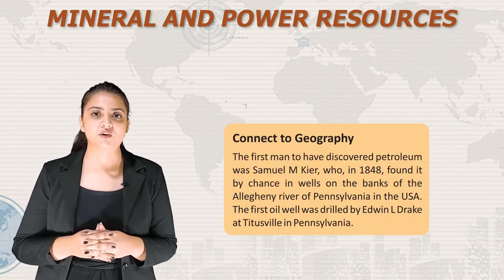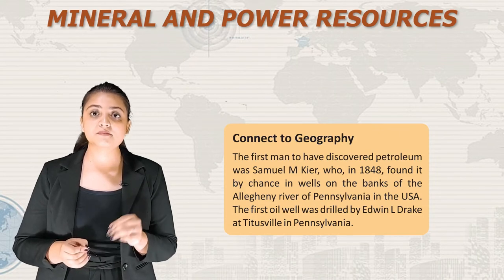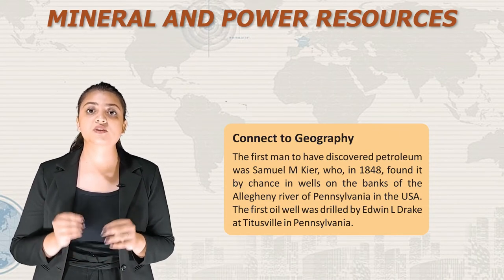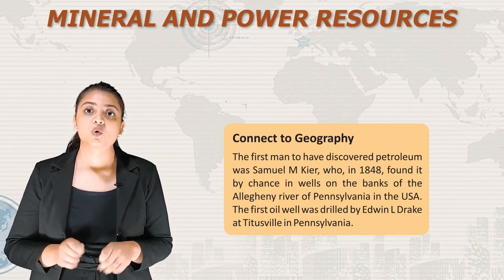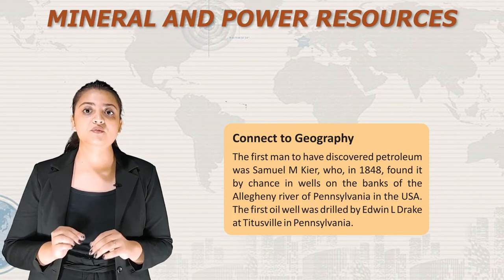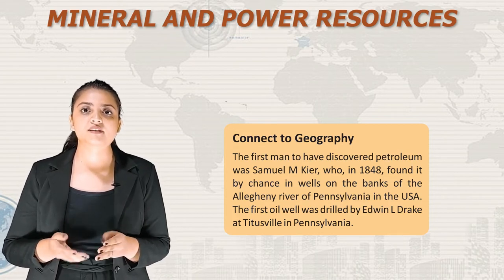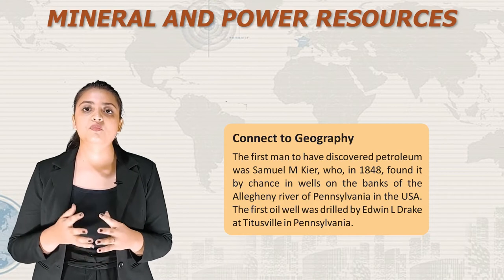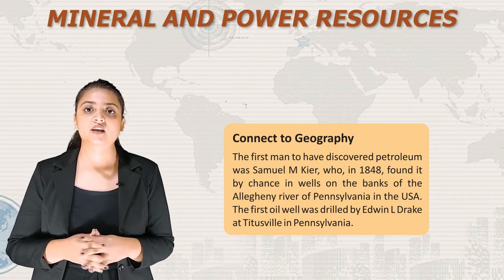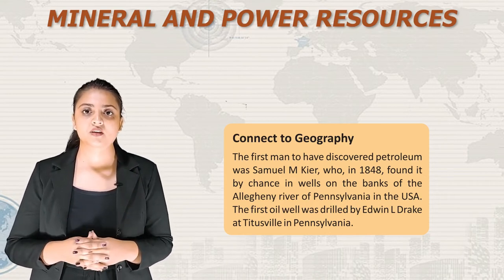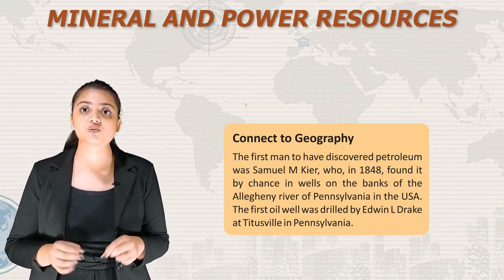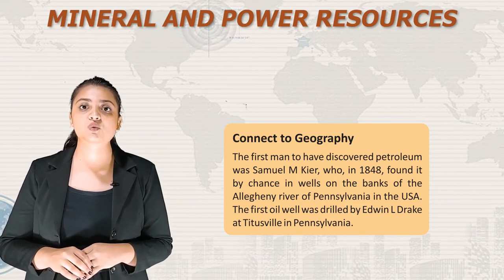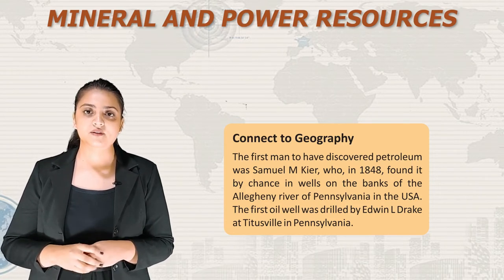Let's connect to geography — the first person to discover petroleum was Samuel M. Kier, who in 1848 found it by chance in wells on the banks of the Allegheny River in Pennsylvania, USA. The first oil was drilled by Edwin L. Drake at Titusville in Pennsylvania.